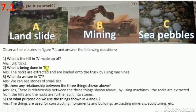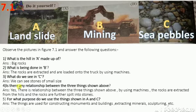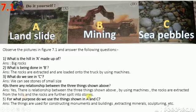What is being done in picture B? The rocks are extracted and loaded onto trucks using machines. What do we see in C? We can see stones of small size. Is there any relationship between the three? Yes — using machines, rocks are extracted from hills and further split into smaller stones. These things are used for constructing monuments and buildings, extracting minerals, sculpturing, etc.